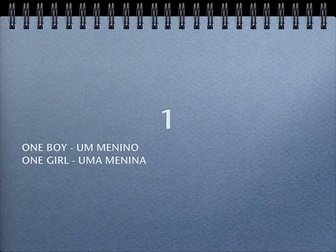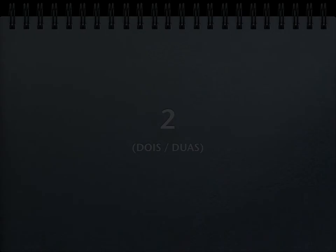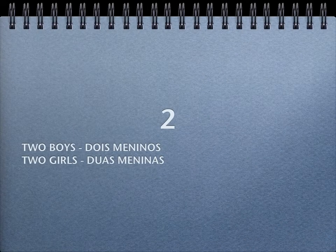So again, number 1 has two possible translations: if the following word is masculine, we use 'um'; if it's feminine, we use 'uma.' We do exactly the same with number 2 — two possible translations, depending on the following word. We can say 'dois' or 'duas.' For example, two boys: 'dois meninos.' Two girls: 'duas meninas.' So 'dois' and 'duas.'